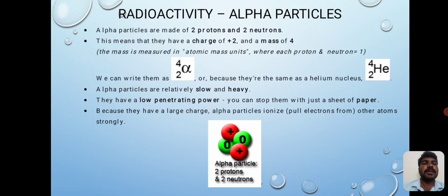Alpha particles are made up of two protons and two neutrons. This means they have a charge of plus two and a mass of four. We can write them as ²α⁴, or as a helium nucleus because they're the same. Alpha particles are relatively slow and heavy. They have a low penetrating power, so you can stop them with just a sheet of paper. Because they have a large charge, alpha particles ionize other atoms strongly.